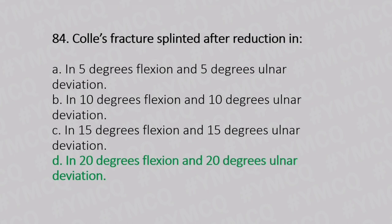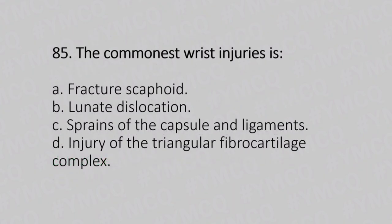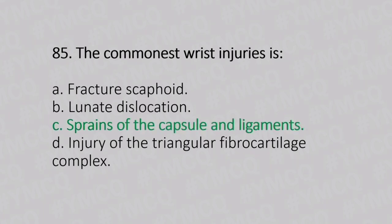Now let's move to question number 85. The commonest wrist injury is. Option A: fracture of scaphoid. Option B: lunate dislocation. Option C: sprain of the capsule and ligaments. Option D: injury of triangular fibrocartilage complex. And the answer is Option C, sprain of the capsule and ligaments.